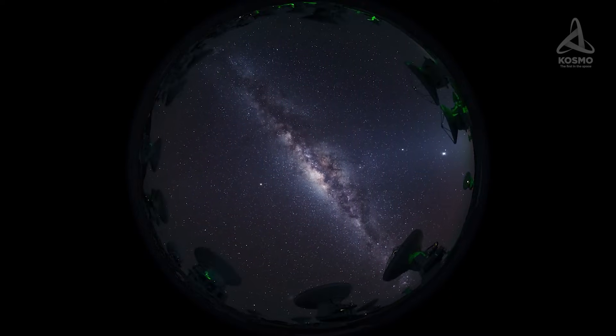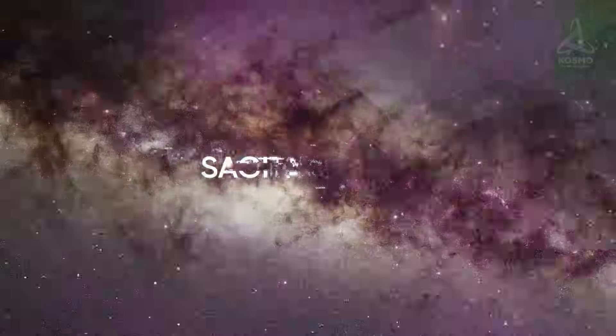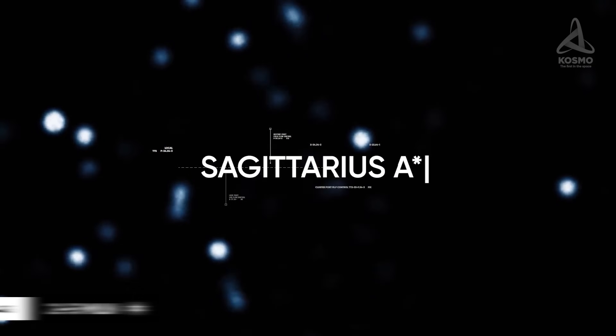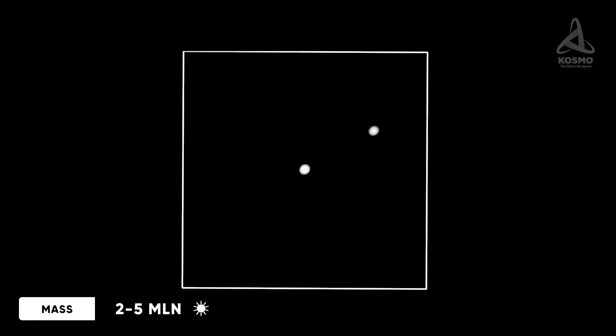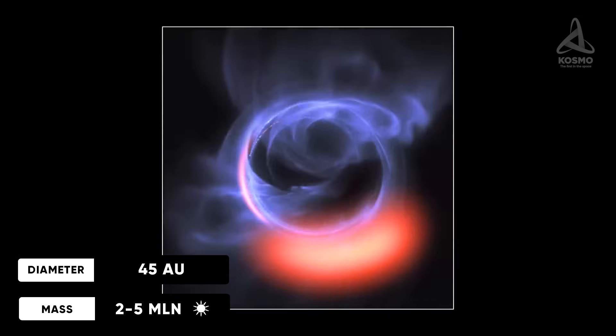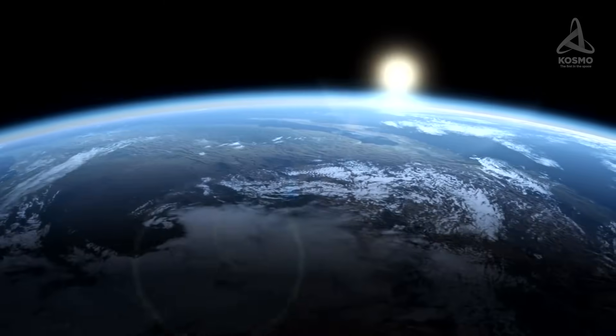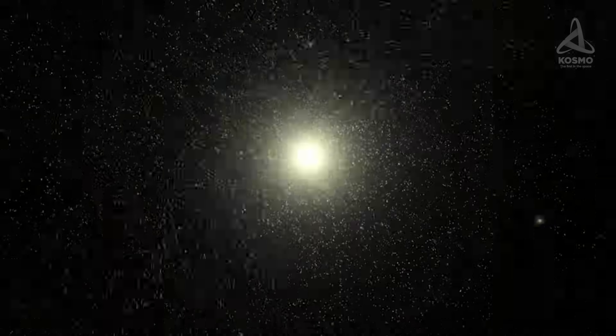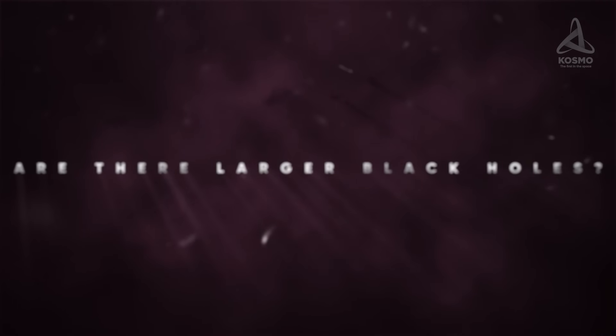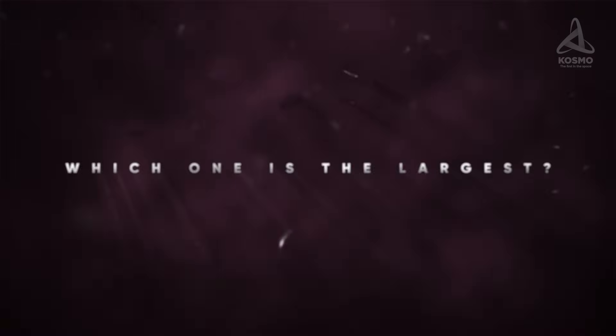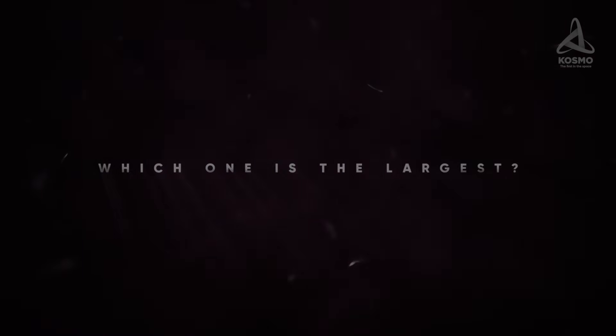A similar object can also be found in the center of the Milky Way. It is called Sagittarius A and boasts from 2 to 5 million times the Sun's mass. The diameter of Sagittarius A is 45 astronomical units, or 45 times the distance from Earth to the Sun. But is it possible to admit of the existence of even larger black holes in space? And which of them is the largest? Let's figure it out!